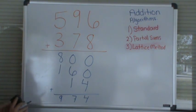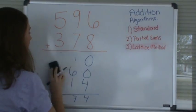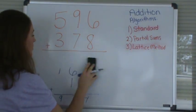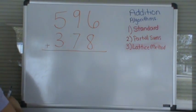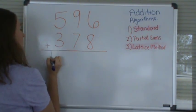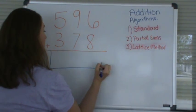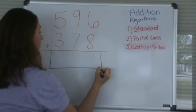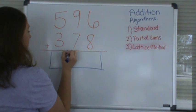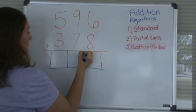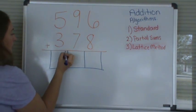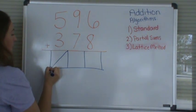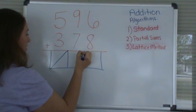The next method is the lattice method. This is actually a very easy method once you know how to set up the problem. In the lattice method, we will draw a box under our answer bar. And then we will make three little boxes between each set of numbers. Now we will add a diagonal line in each box.